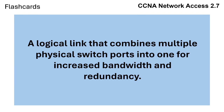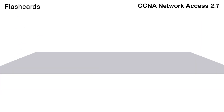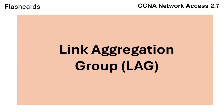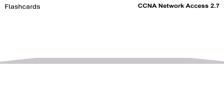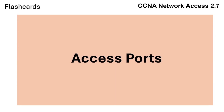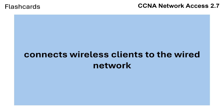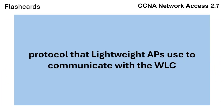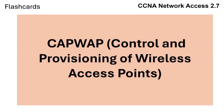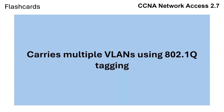Key terms to remember: Link aggregation is a logical link that combines multiple physical switch ports into one for increased bandwidth and redundancy. An access port carries traffic for a single VLAN. An access point connects wireless clients to the wired network. CAPWAP is the protocol that lightweight APs use to communicate with the WLC. A trunk port carries multiple VLANs using 802.1Q tagging.